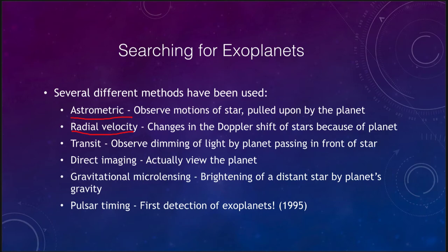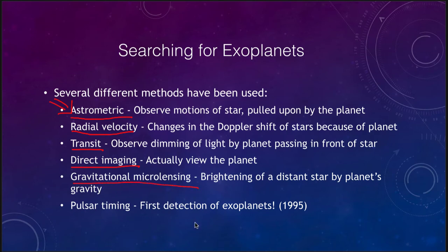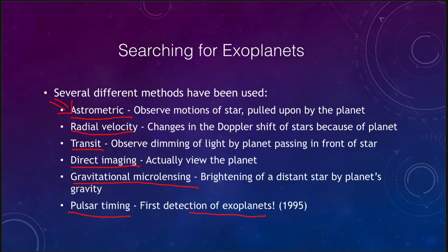With the radial velocity method, the velocity of the star changes — similar to the astrometric method, except the astrometric method looks at position while radial velocity looks at velocity. We can look at the transit method, where we observe the dimming of light when a planet passes in front of the star. More rarely, we can use direct imaging, where we actually view the planet and see its light. A couple of less common methods: gravitational microlensing, where a planet passing in front of a distant star temporarily brightens it; and pulsar timing, where variations in pulsar timing imply orbiting planets. Pulsar timing was actually the first detection of exoplanets back in the 1990s.